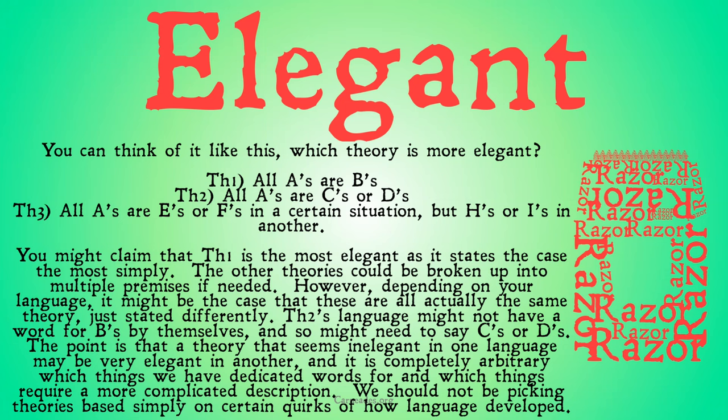We can see this even with formal languages, in that the level to which you define certain terms may prescribe how complicated your theories, axioms, or assumptions need to be.